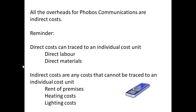All those overheads — whether fixed or variable — are examples of indirect costs. Direct costs are costs that you can trace to an individual cost unit, such as labour, materials, and sometimes certain expenses. Whereas indirect costs are those that can't be traced to an individual cost unit, like rent, heating, lighting and so on.